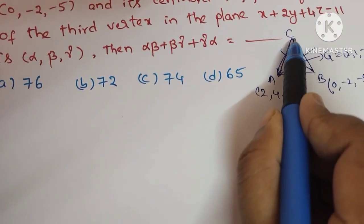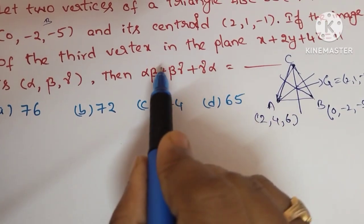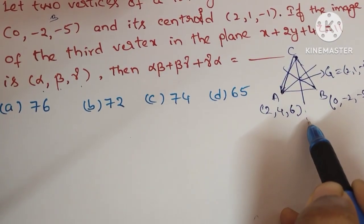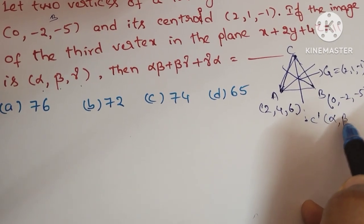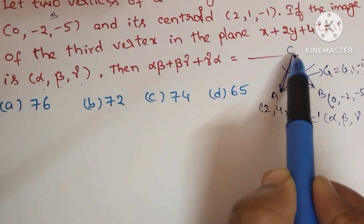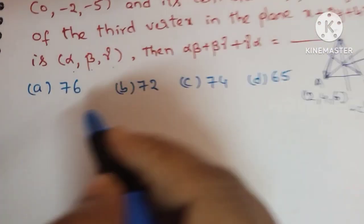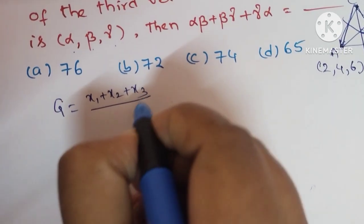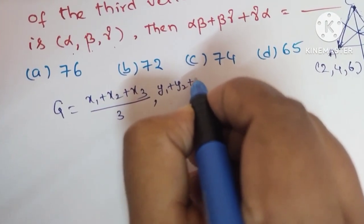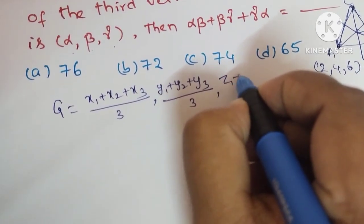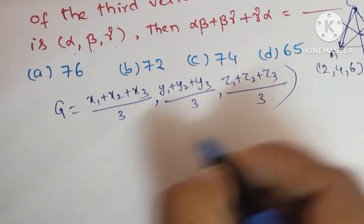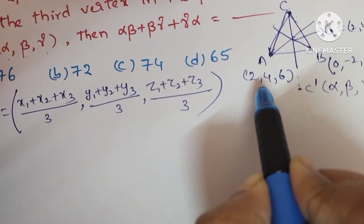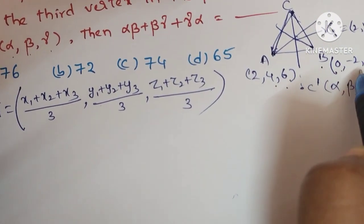We need to find the third vertex C first. After finding C, we find its image in the given plane — that image is (alpha, beta, gamma). So suppose C has image C'. We use the centroid formula: G = ((x1+x2+x3)/3, (y1+y2+y3)/3, (z1+z2+z3)/3). Consider A as (x1, y1, z1) and B as (x2, y2, z2).